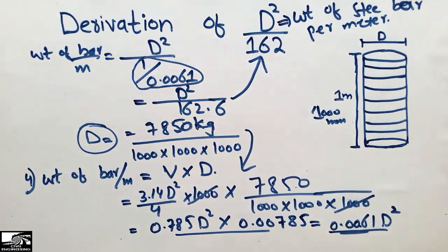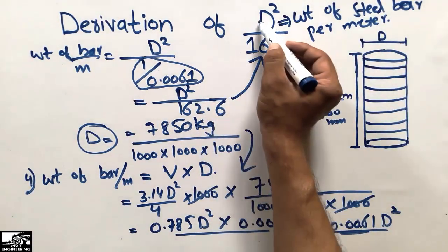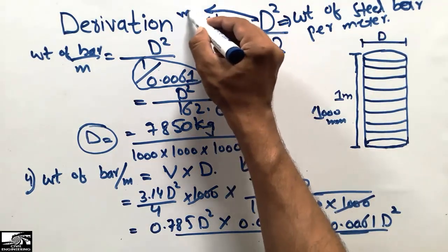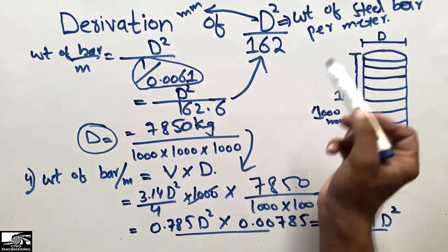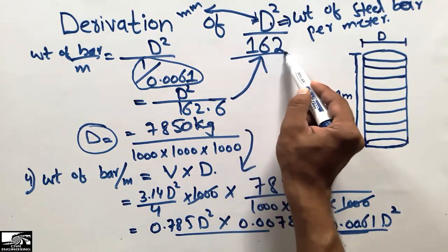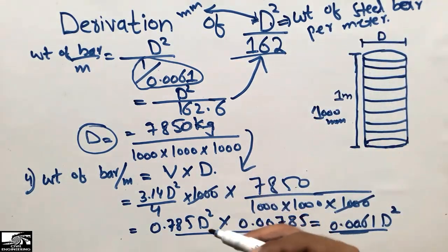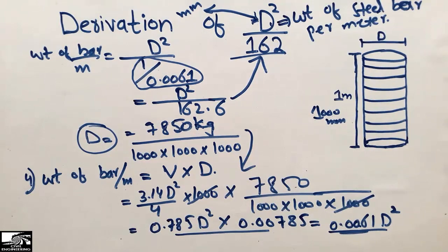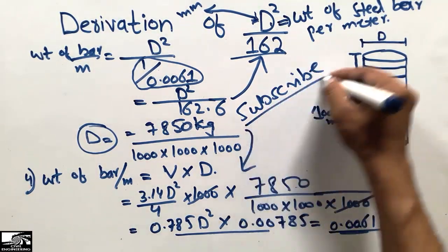This is the derivation of the formula D²/162, used to find the weight of the steel bar per meter, where D is the diameter of the steel bar in millimeters. All units used here are in millimeters, so D must also be in millimeters. By putting the diameter value in millimeters and dividing by 162, you get the weight of the steel bar per meter. You can also find the total weight for any length by multiplying by the bar length. Subscribe to our channel for daily C1 Engineering videos. Thank you for watching.